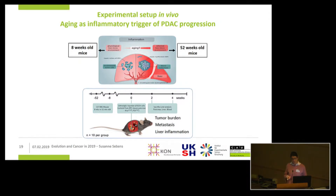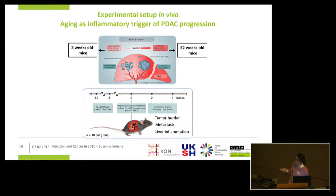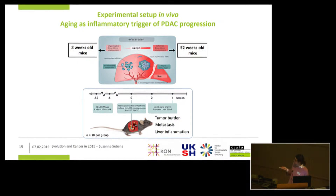To address this, we used a syngenic pancreatic cancer model and used aging as an inflammatory trigger, using mice of different ages. On the one hand, eight-week-old mice resembling a young adult in human beings, and on the other hand, 52-week-old mice resembling the median age of diagnosis of PDAC in human beings — that means 70 to 75 years. Both groups of mice received an intrapancreatic inoculation of syngenic pancreatic cancer cells, and after two and four weeks, we assessed the tumor burden, metastasis, and signs of liver inflammation.